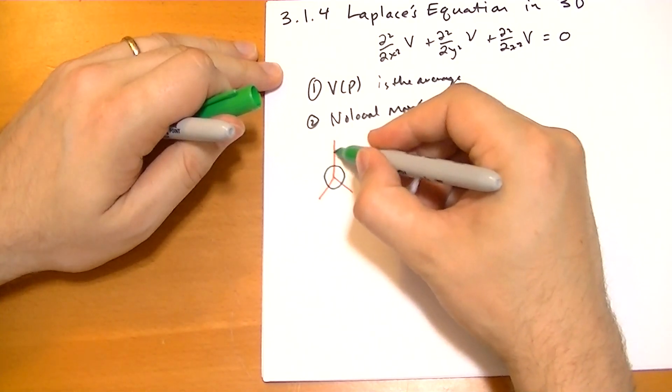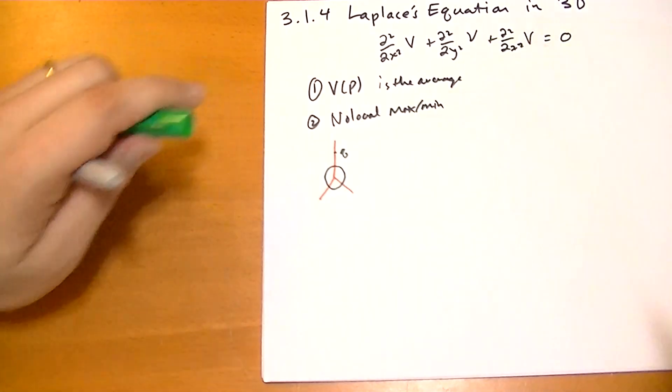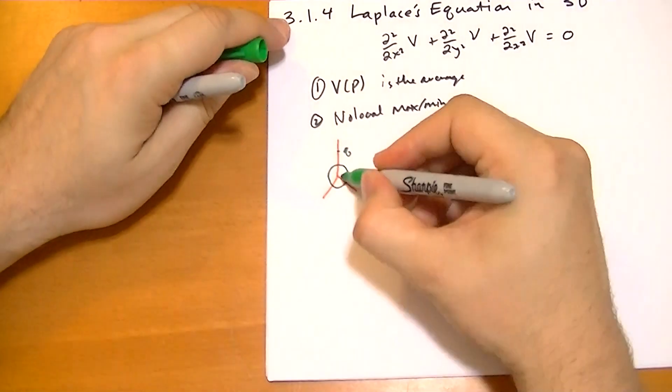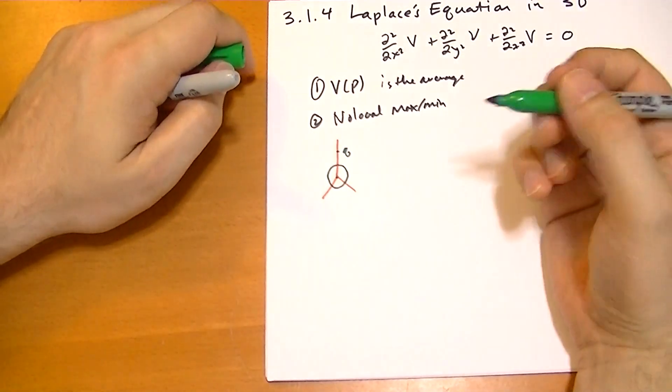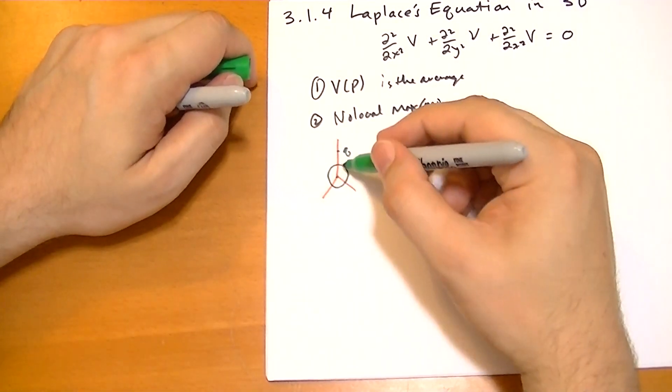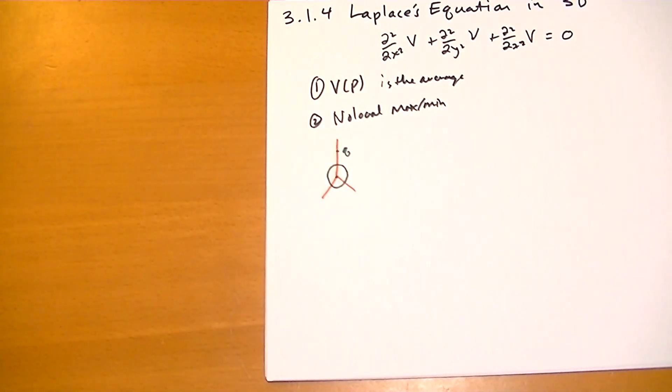And then we have up here a point charge q. And what we're trying to do is we're trying to calculate what the potential is at the center of the origin based on what the potential is at each part of that sphere.